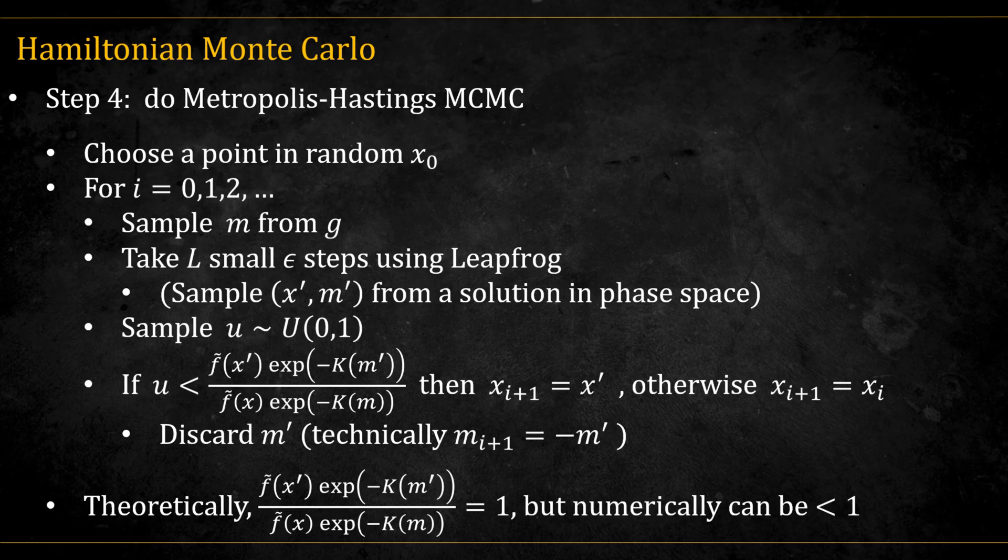Here's the full algorithm. Starting at a random position x0, and for as many samples as you'd like, we sample M from the kinetic distribution G. Then we solve the dynamics in phase space by taking L small epsilon steps using the leapfrog method. Then we draw U from a standard uniform distribution. We compare U to the acceptance probability, which is the ratio of the unnormalized joint distribution at the new point versus the old point. If U is below this ratio, we accept the new point. Otherwise, we stay at the old point. Strictly speaking, we also need to flip the sign of the new momentum. I'll explain why in a moment. But since the momentum variables are discarded anyway, this step is optional.